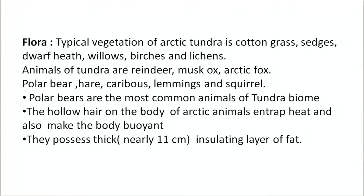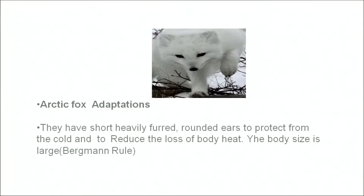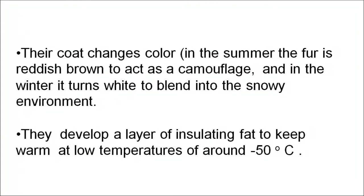The typical tundra vegetation is cotton grass, sages, dwarf heath, willows, birch and lichens. The animals include reindeer, musk ox, arctic fox, polar bear, hare, caribou, lemmings and squirrel. The polar bear is the most common animal of the tundra biome. The hollow hair on the body of arctic animals entraps heat and also makes the body buoyant. They possess a thick, 11-centimeter insulating layer of fat. The arctic fox is highly adapted to the polar region — its coat changes colour: in summer the fur is reddish-brown to act as camouflage on land, while in winter it turns white and blends into the snowy environment. They also develop a layer of insulating fat to keep warm at temperatures around minus 50 degrees Celsius.